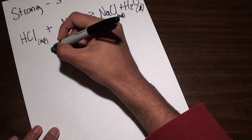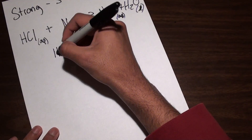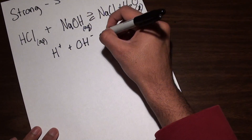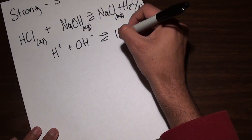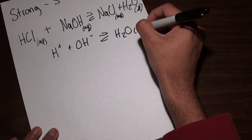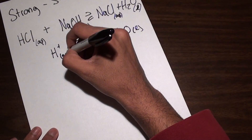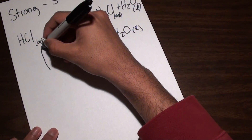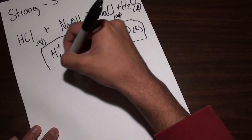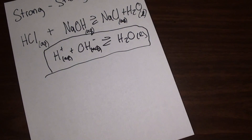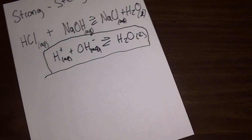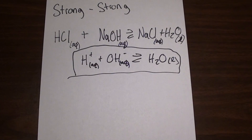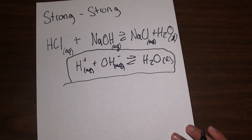When writing the net ionic, one thing you always want to do is keep track of the states of all your reactants and products, because that's really key. The acid and the base are aqueous, sodium chloride is also aqueous because it is highly soluble, and the water is in a liquid state. So the net ionic is really as simple as H⁺ + OH⁻ → H₂O, and that is the net ionic equation.